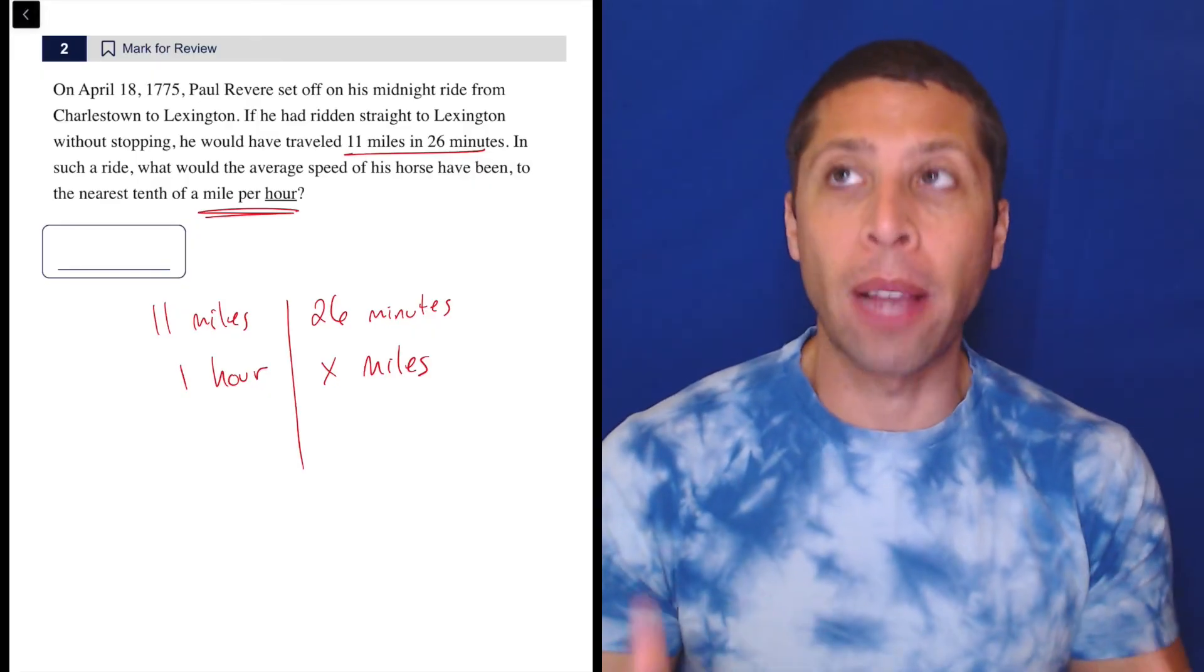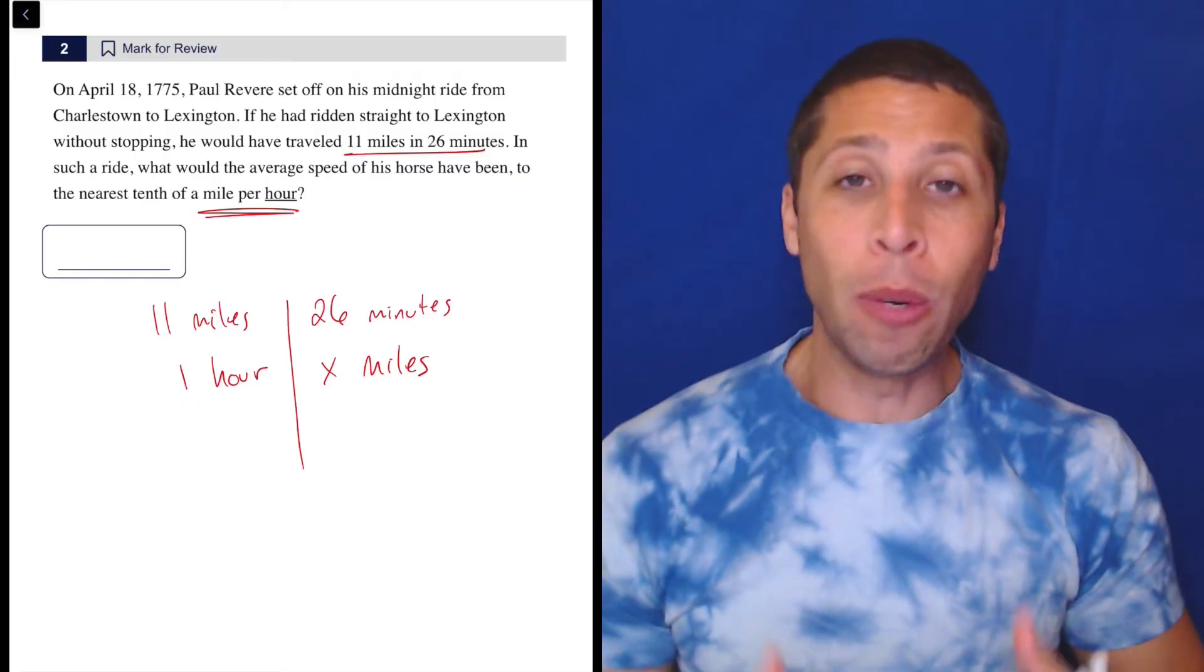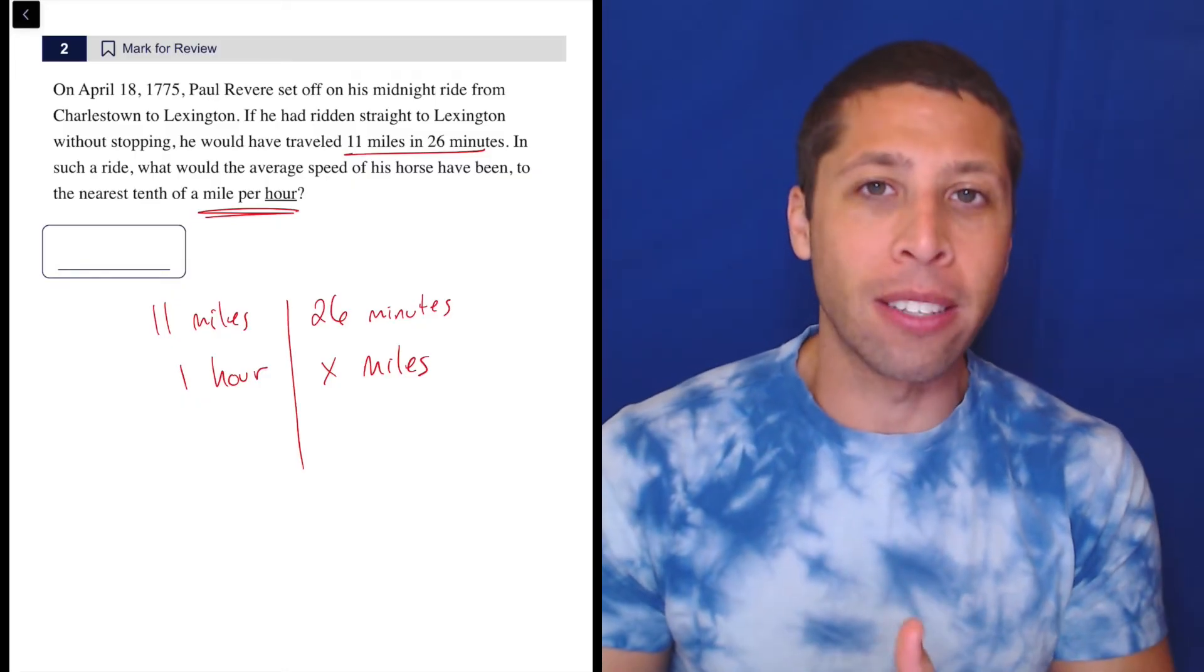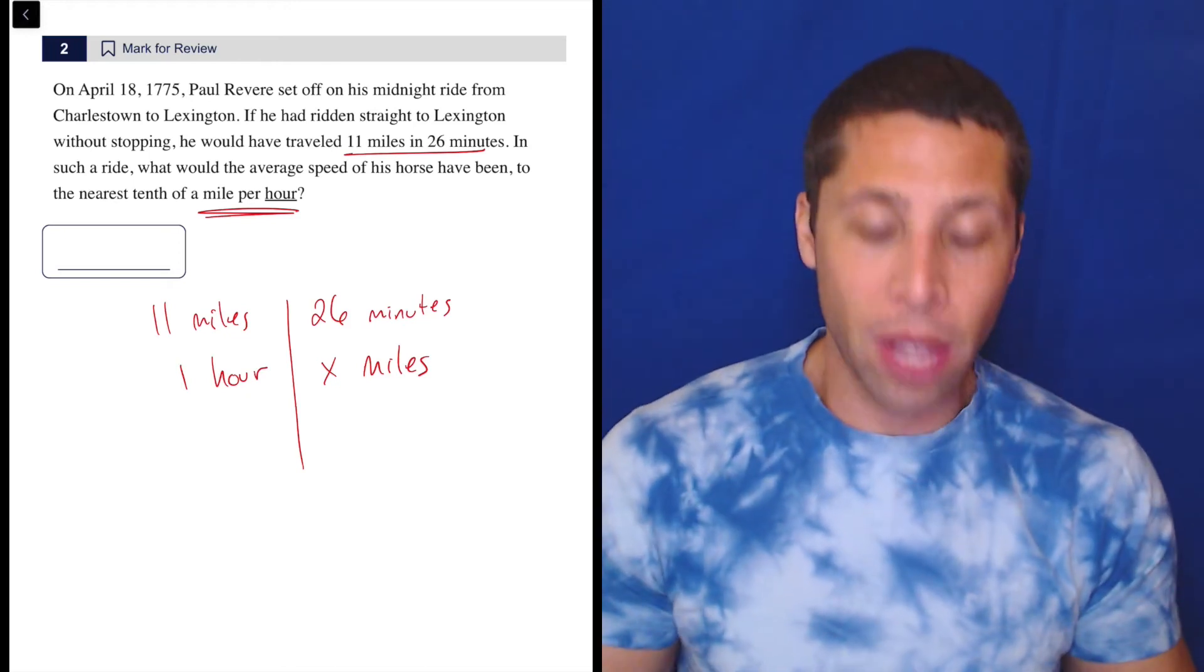And that's what every speed is, right? Miles per hour, meters per second. It's a per one thing. We just don't say the one because it's kind of built into the language of how we talk about it. But for these kinds of questions, we need to have two things, and now we do.